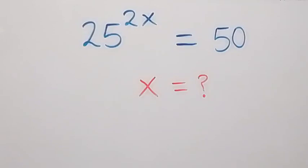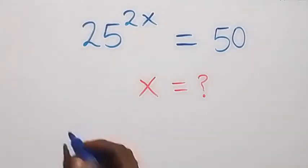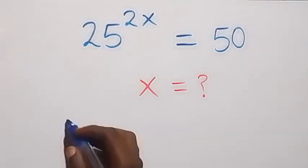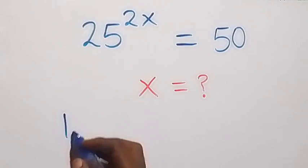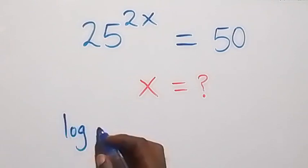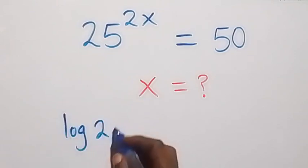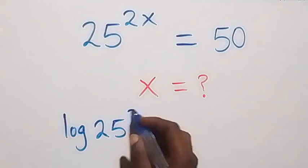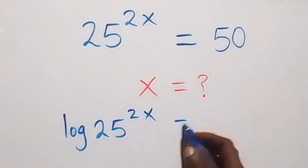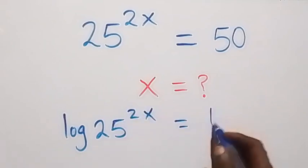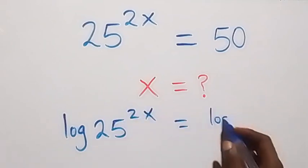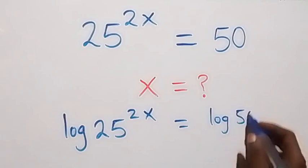Hello, you are welcome. How to solve for x in this nice exponential equation. On what is given, we take the log on both sides. Log 25 raised to power 2x equals to log 50 on this side.